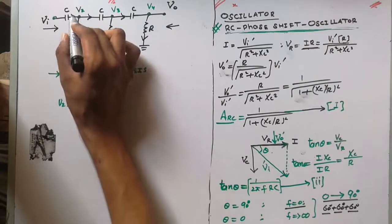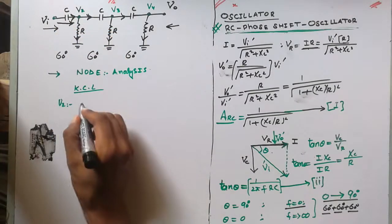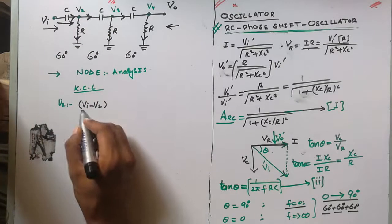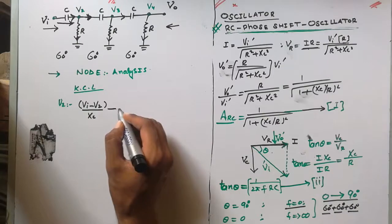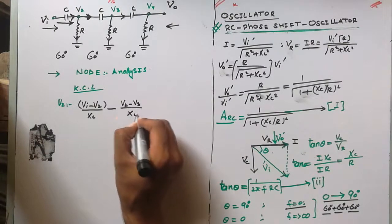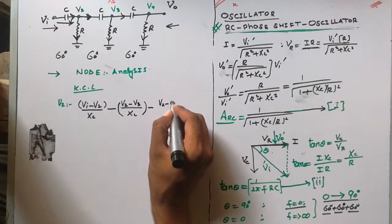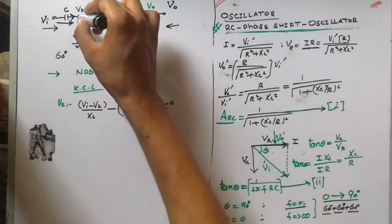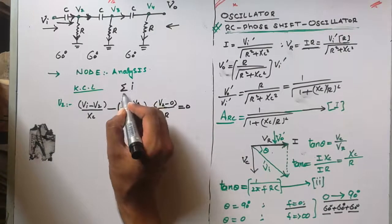At node V2 there are three currents: one entering and two leaving. Entering current is taken as positive and leaving as negative. The entering current through the capacitor is (VI minus V2) over Xc. The first leaving current through the capacitor to V3 is minus (V2 minus V3) over Xc. The second leaving current through the resistor to ground is minus V2 over R. The sum of all currents equals zero: (VI minus V2)/Xc minus (V2 minus V3)/Xc minus V2/R equals zero.